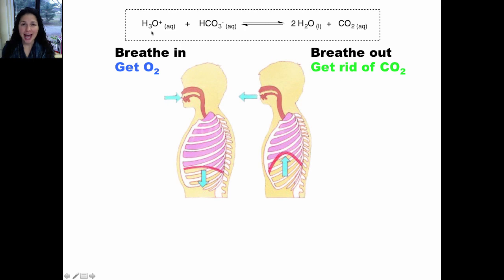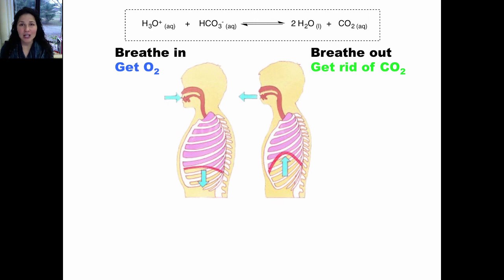This situation is called acidosis because there's excess acid in your blood, and it can be dangerous. On the other hand, if you're getting rid of too much carbon dioxide because you're hyperventilating, you're removing carbon dioxide from the system. It puts the system out of equilibrium, and according to Le Chatelier's principle, the equation would shift to the right to produce more carbon dioxide. But that would get rid of acid and can get rid of too much acid, causing a decrease in acid concentration and an increase in pH. This is called alkalosis and it can also be dangerous.